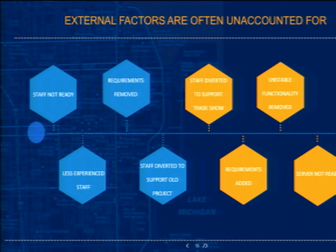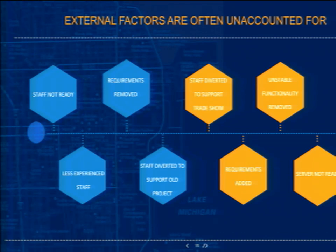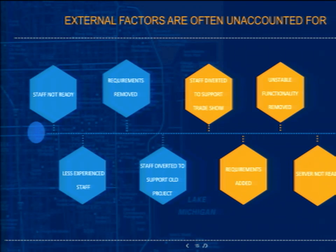How many times have you layered two projects back to back and had to skimp on one because you keep going back to support efforts in another? Later in the project, staff gets diverted to a trade show. All of your projects are experiencing this right now, and I bet it wasn't in the estimate. These items don't necessarily need to be passed on to the client — it's not their fault — but they need to be planned for in your timelines.